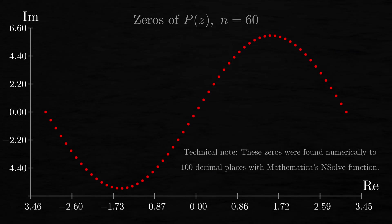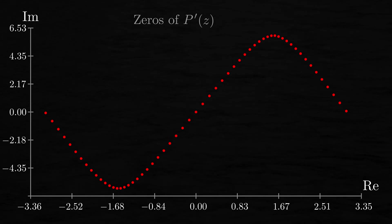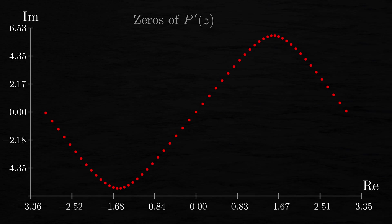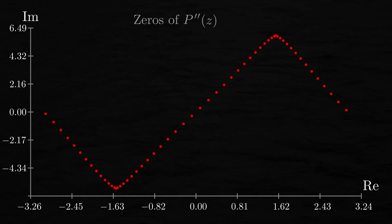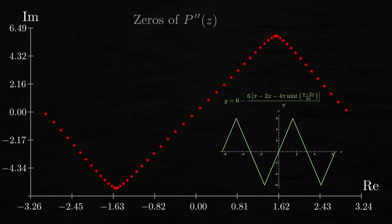Now we're going to take the derivative of this polynomial just to see what happens. So here are the zeros of the first derivative of p and, well, it looks like it deformed our zeros a little bit. Let's differentiate p one more time. So here we have the zeros of the second derivative of p. Hmm, looks a little bit like part of a triangle wave. Let's keep going.